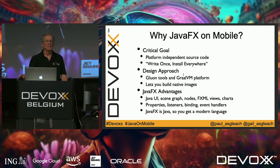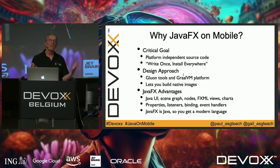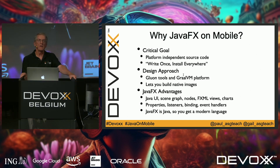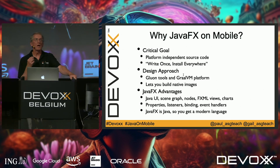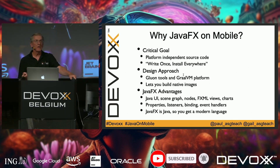So why JavaFX on mobile? A critical goal is writing platform-independent source code — one code base — that you can install on multiple devices. To do this, you need Gluon's tools and GraalVM for native images. JavaFX is a mature, well-maintained UI toolkit that is platform-independent. It targets mobile — iOS and Android — but you can also do desktop applications on Mac, Linux, or Windows, all portable.